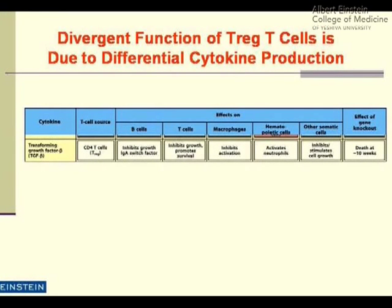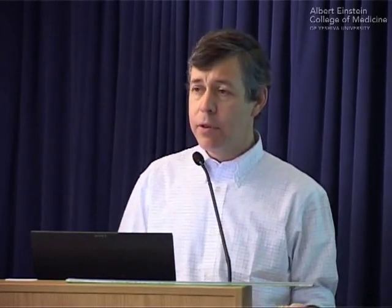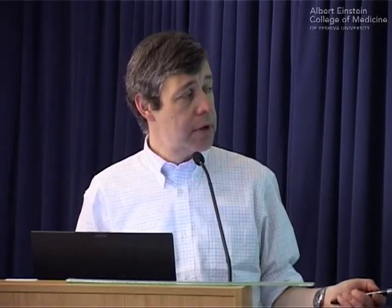Treg cells produce TGF-beta as their major cytokine. TGF-beta inhibits growth of B cells, inhibits T cell growth, inhibits activation of macrophages, does activate neutrophils, and inhibits other cells. If you knock out the Treg phenotype, mice die within several weeks of age from overwhelming autoimmune diseases, because without the brake, you keep accelerating and ultimately crash.